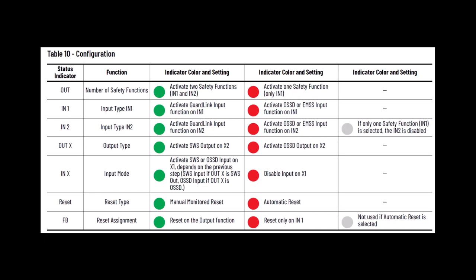You should be viewing the configuration table in the user manual during the configuration process. The configuration table shows the setting for each of the indicator LEDs. For example, the out indicator shows the number of safety functions. Green for two inputs, or red for only one input.